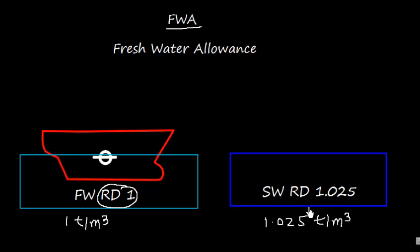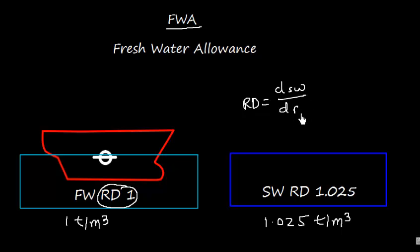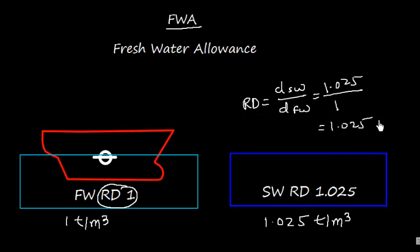The relative density is the ratio of the density of a substance to the density of fresh water. So in the case of salt water, the relative density is the density of salt water divided by the density of fresh water, which gives 1.025 divided by 1, or simply 1.025. Relative density doesn't have any unit.